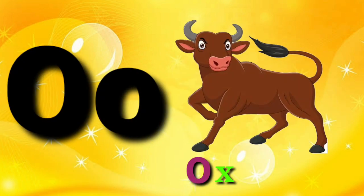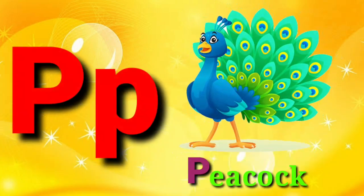O for Ox, Ox means Bail. P for Peacock, Peacock means Moor.